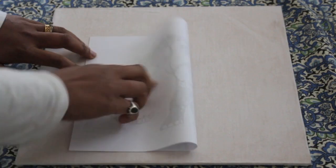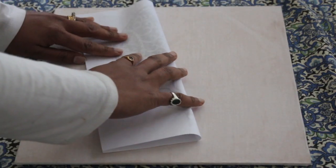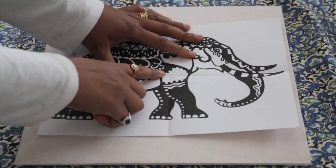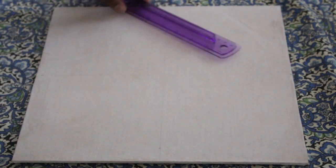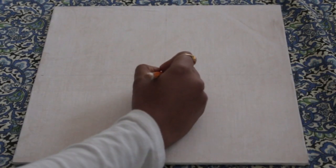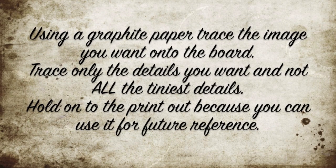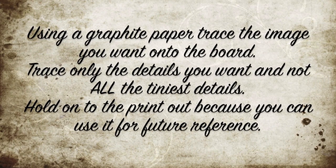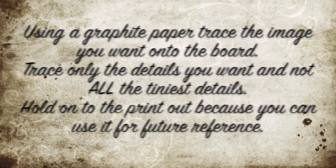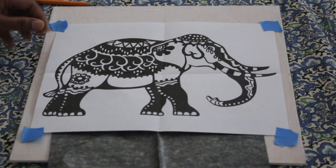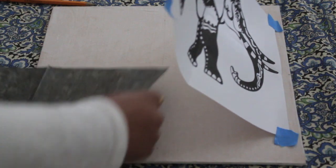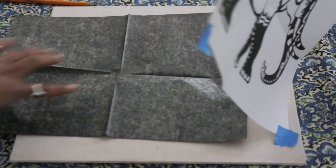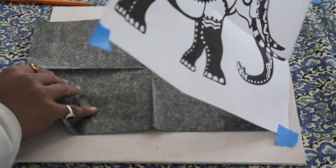Mark the center of the printout and also the center of the board and align them together. Tape them at the side and using a graphite sheet, you can now trace the outline of the image that you want. Be very careful while you're doing this. You don't have to outline all of the details. Just outline the ones that you think you want on the sheet.